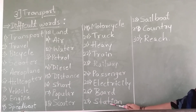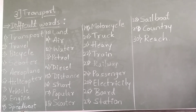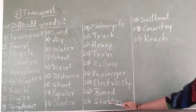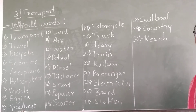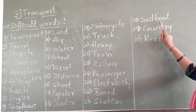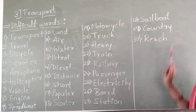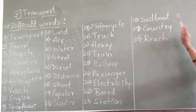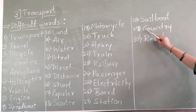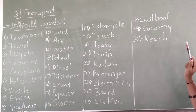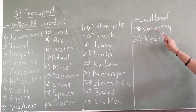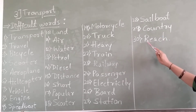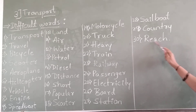S-T-A-T-I-O-N — station. S-A-I-L-B-O-A-T — sailboat. C-O-U-N-T-R-Y — country. R-E-A-C-H — reach.